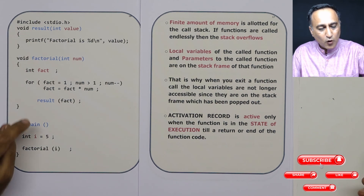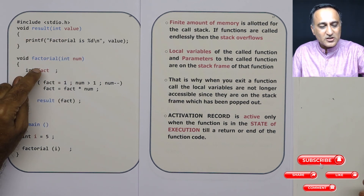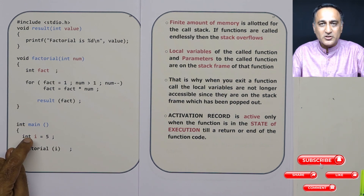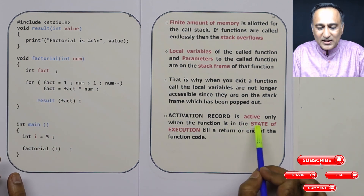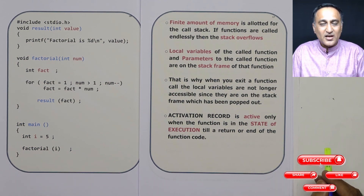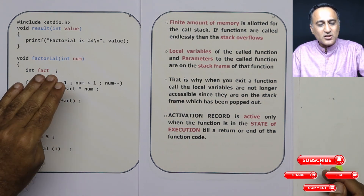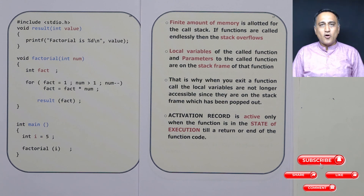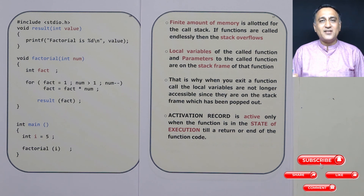When result is executing, all activation records of main, factorial, and result will be active. The minute result completes execution it is popped out, and you will have only the activation records of factorial and main. Once factorial completes, its activation record is also removed. You will have activation records only for those functions currently being executed. The minute execution completes, the activation record is removed. I hope you got a good idea about what the activation record is and its importance — once we come to recursion, you'll appreciate why so much effort was spent explaining activation records.